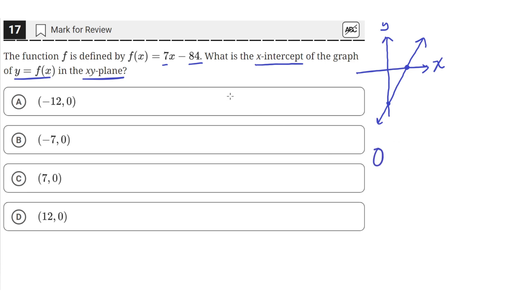So when y is 0, this f of x, since y equals f of x, becomes 0, and that equals 7x minus 84. And we'll solve for the value of x to see the value of x that this function has when y is 0. That'll give us the x-intercept.